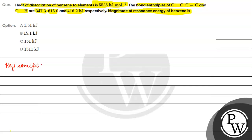The key concept for this question is the determination of resonance energy. Usually there is a good agreement between the enthalpy of formation calculated from bond energies and the one determined experimentally. But when a compound exhibits resonance, there is a considerable difference between the two values.